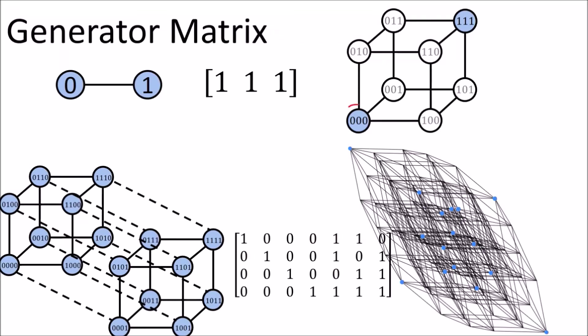In this cube the two valid code words are separated by three edges. And it turns out that in this seven-dimensional cube all the valid code words are also separated by three edges.